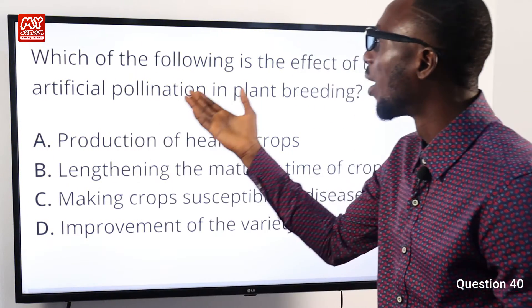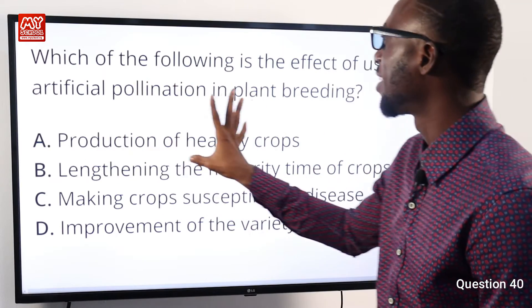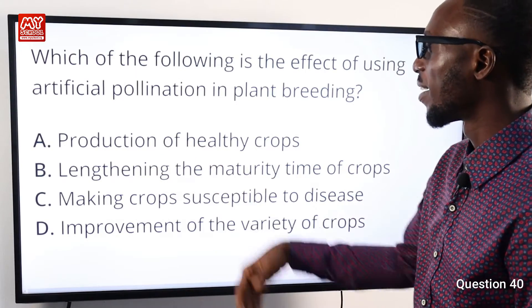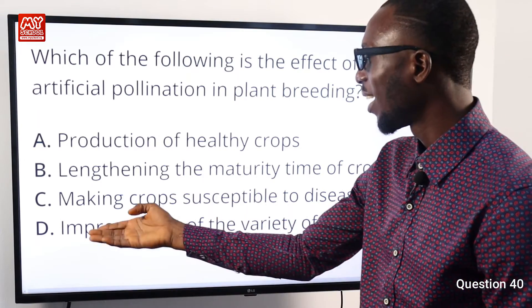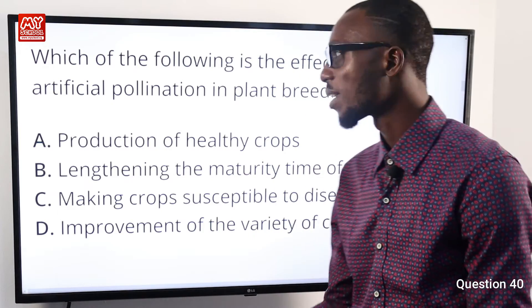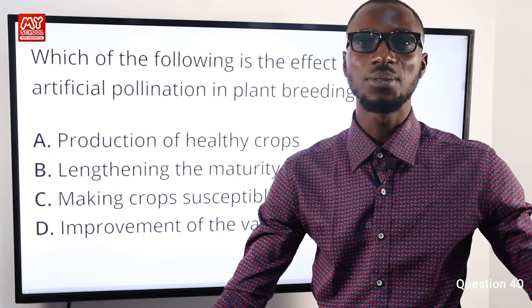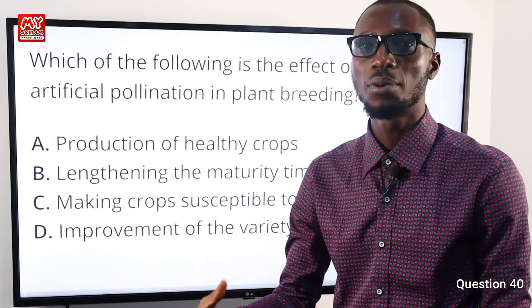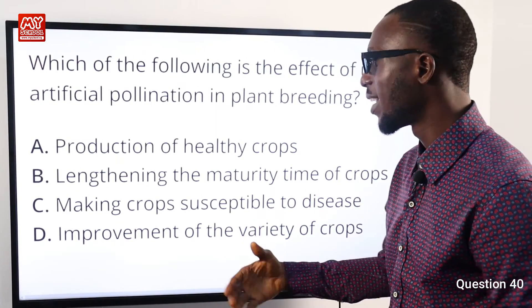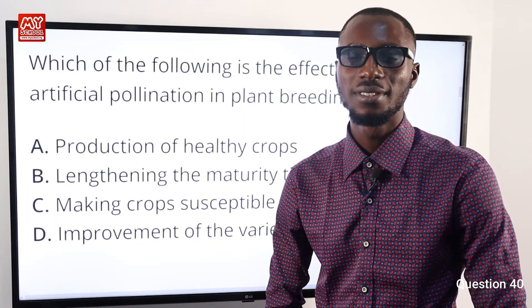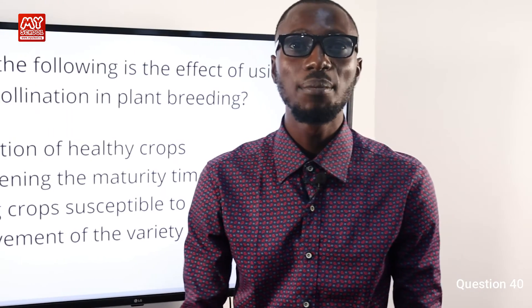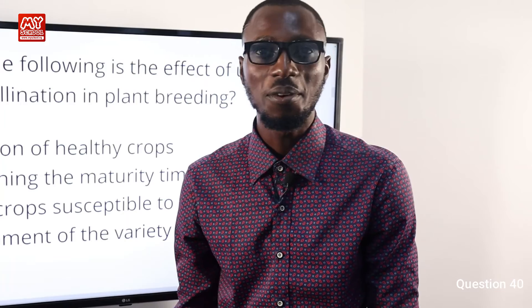Question 40: Which of the following is an effect of using artificial pollination in plant breeding? Option D — improvement of the variety of crops — is correct. When you do artificial pollination, you introduce the anther of one plant to the stigma of another to improve the variety, getting particular traits you want the next generation to have. We've now come to the end of this segment. Hit the like button, click subscribe, and tap the bell notification so you get informed as the next videos are released.